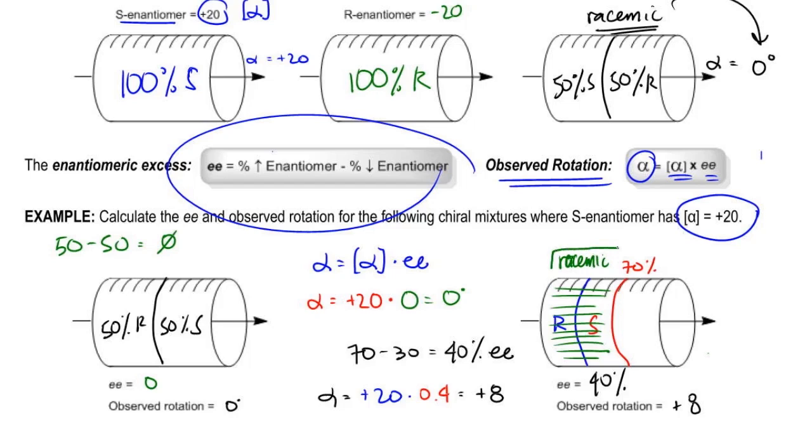And the racemic portion adds up to – I'm just going to put here racemic. The racemic portion adds up to what? It adds up to 60% because I have 30 and 30. That means that the only part of this that's optically active is the extra remaining S or an enantiomeric excess and that part equals 40%.